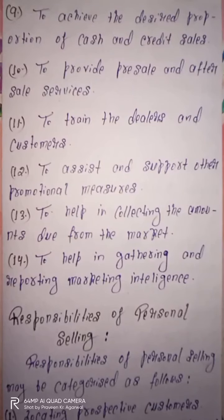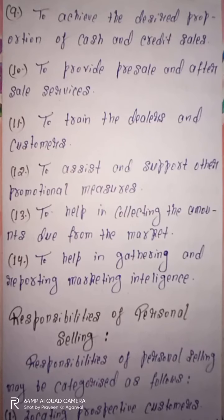Next objective is to achieve the desired proportion of cash and credit sales. Har organization apne particular product ko maximum quantity me sale karna chahte hain, aur iske saath saath woh chahte hain ki jyada se jyada cash me payment ho, yani ki ek taraf uska goods consumer tak pahuncha, aur turanth uska payment ho gaya. Ya phir jyada credit sales hain, unko properly achieve karne ke point of view se bhi, organization personal selling ko focus karti hai.